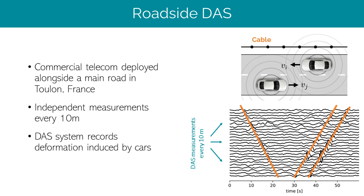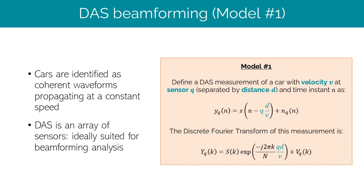This example shows an ideal case where all cars are clearly visible and separated in time. In reality, we are often faced with challenging scenarios such as trains of closely trailing cars, cars traveling in opposite directions whose traces intersect, and various sources of coherent and incoherent noise. Since we identify cars as coherent waveforms propagating at a constant speed, and since DAS is essentially an array of sensors, we can tackle this challenge with beamforming analysis.